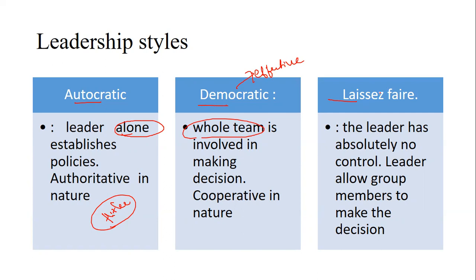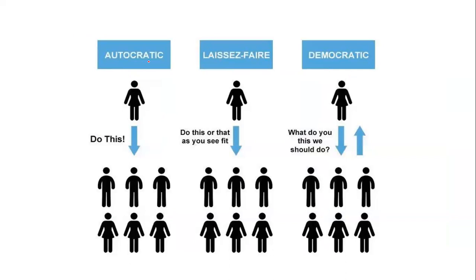In laissez-faire leadership, the leader has absolutely no control. Complete authority rests with the subordinates, who make the decisions. There is effectively no active leader in this style. In contrast, in autocratic leadership, there is a single commanding way of directing: the leader controls everything and commands subordinates.